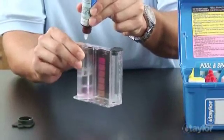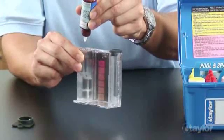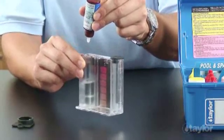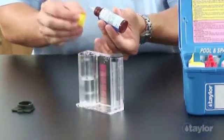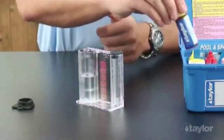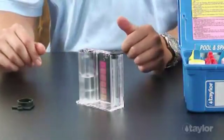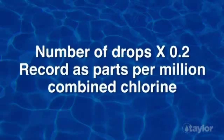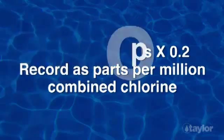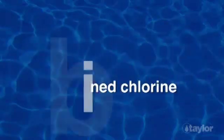Add one more drop of titrant after the endpoint to be certain the color change is permanent. If the color remains unchanged, do not count this drop. Multiply the drops expended in the previous step by 0.2 and record as parts per million combined chlorine.